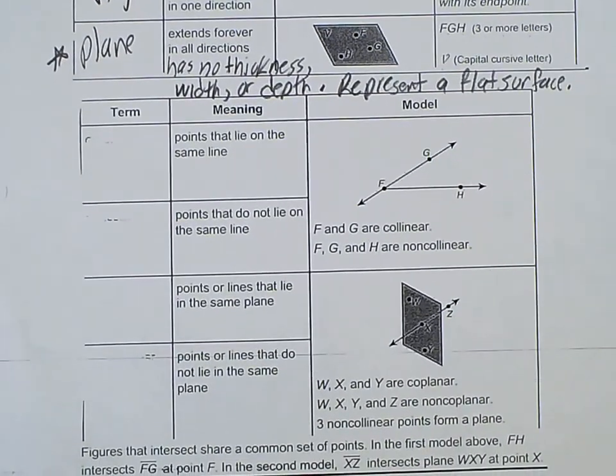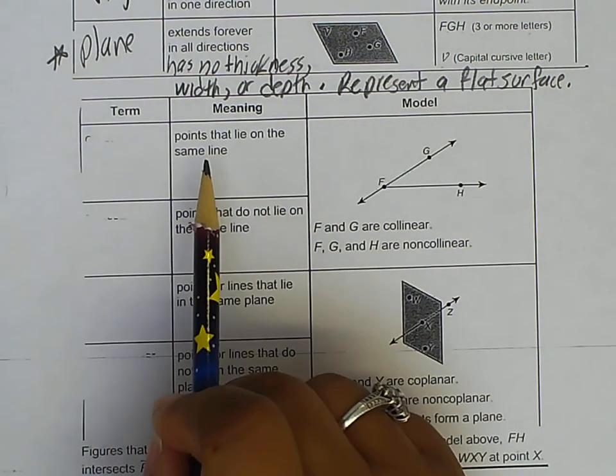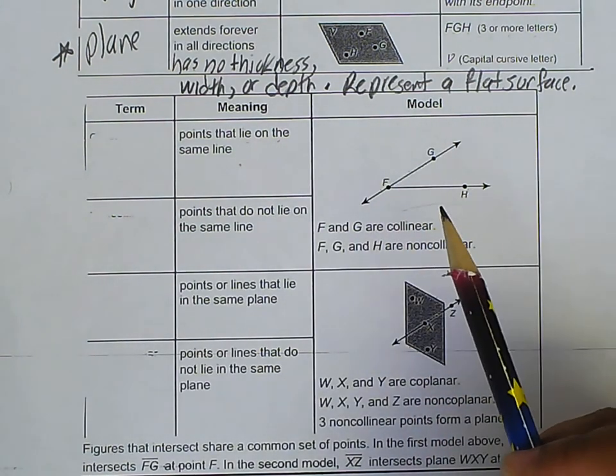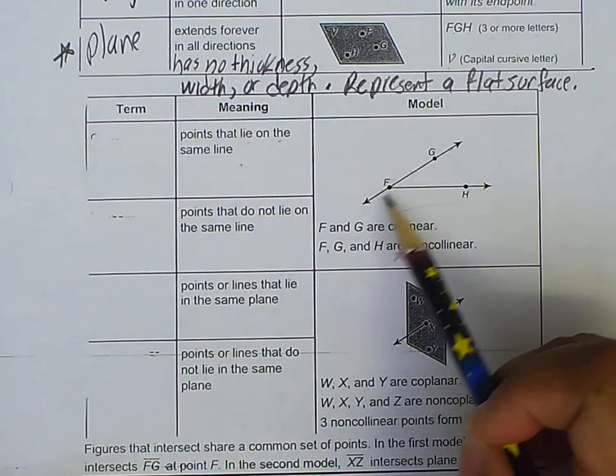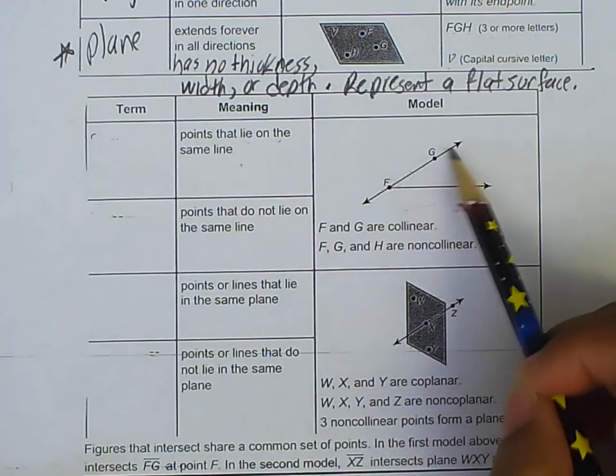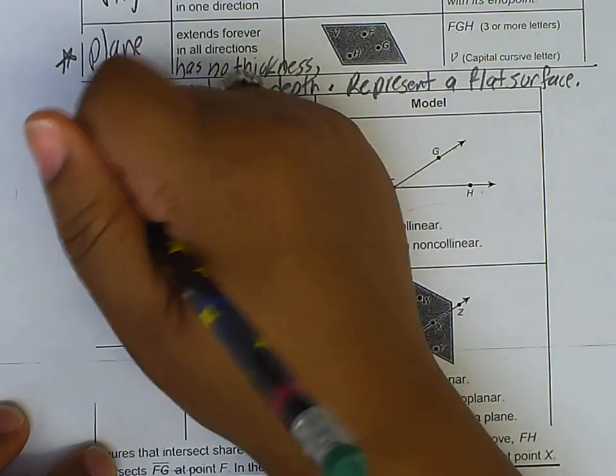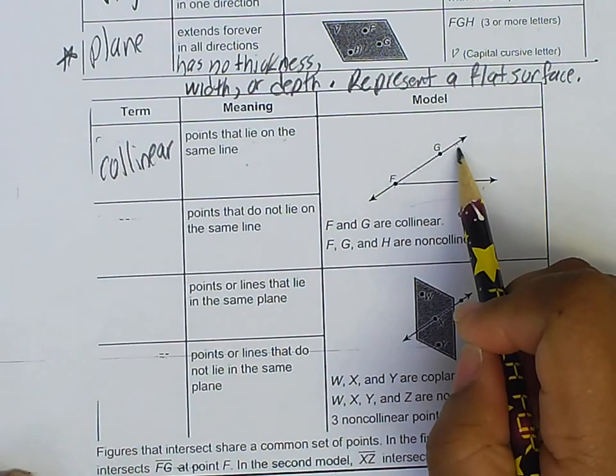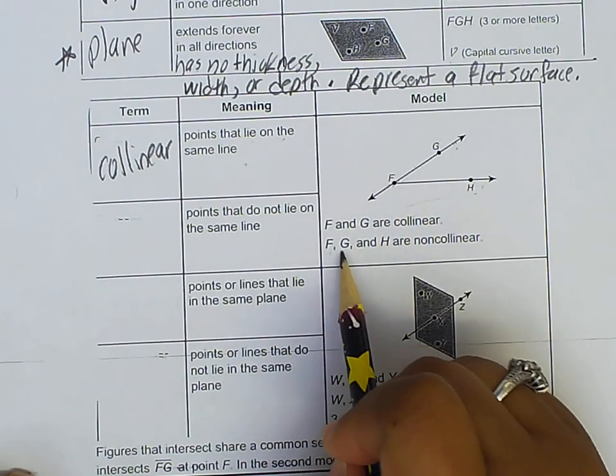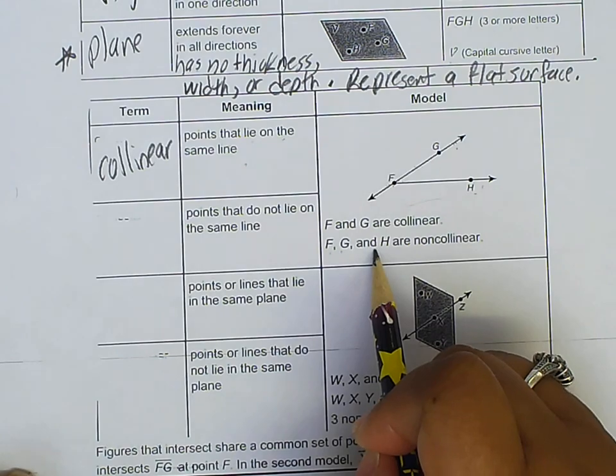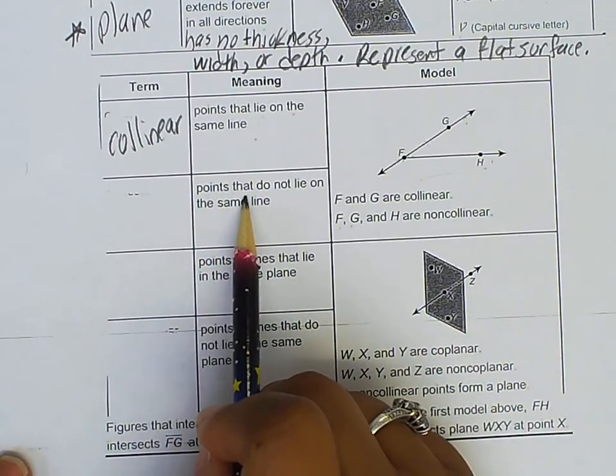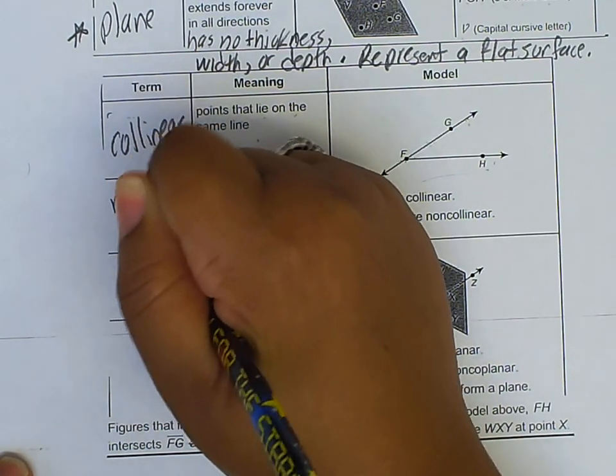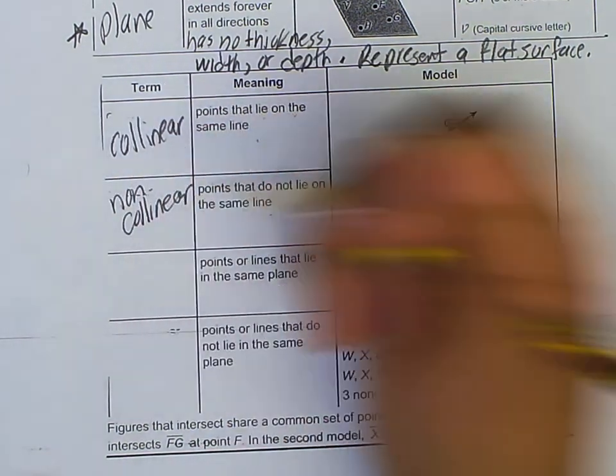So now we're going to go down here and do these other ones. This one says points that lie on the same line. Here's an example here. F and G lie on the same line. F and H lie on the same line. But F, G, H do not. So this will actually be collinear. And as you can see, F and G are collinear. You can actually say F and H are collinear, and then F, G, and H will be considered non-collinear. Points that do not lie on the same line. We just talked about that. That would just be non-collinear.